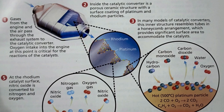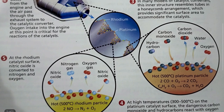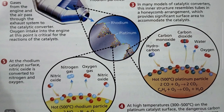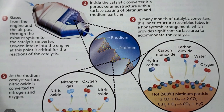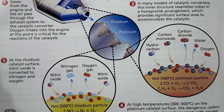If we zoom in on this picture, we see that on the surface of this honeycomb there is a coating of platinum and rhodium particles. These platinum and rhodium particles are the catalysts which convert the poisonous gases into non-poisonous substances — which is why this device is called the catalytic converter.